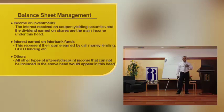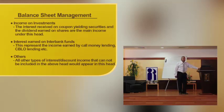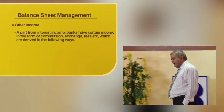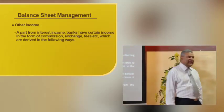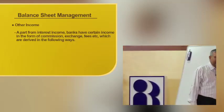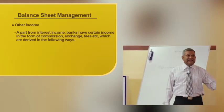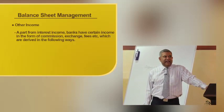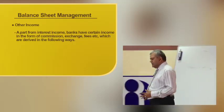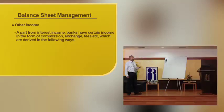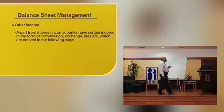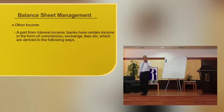Now we are going to discuss non-interest income — also called other income. Banks have secondary income in the form of commission, exchange, fees, etc. Commission is normally charged on issuing a letter of guarantee or a letter of credit. It represents interest in a different form — when the bank gives a funded advance, the return is interest; when the bank gives a non-funded exposure, the same return becomes a commission.